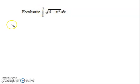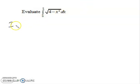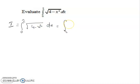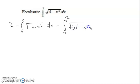So what is the question? We can say that I is equal to the integral from 0 to 2 of 4 minus x square dx. And we can write 4 as 2 squared, so it becomes the integral of under root 2 square minus x square dx.